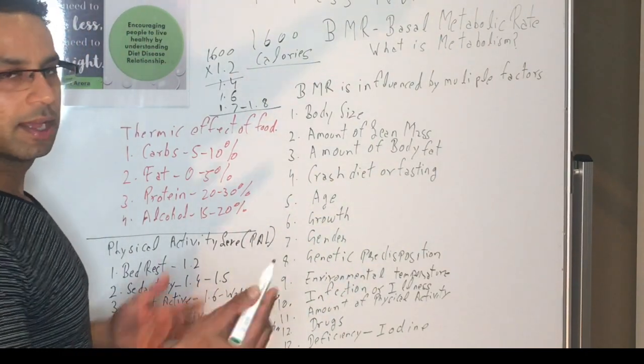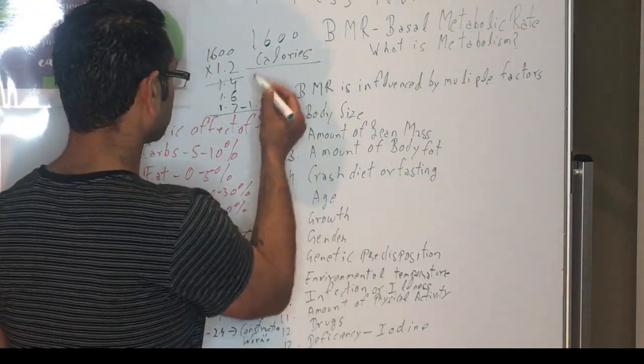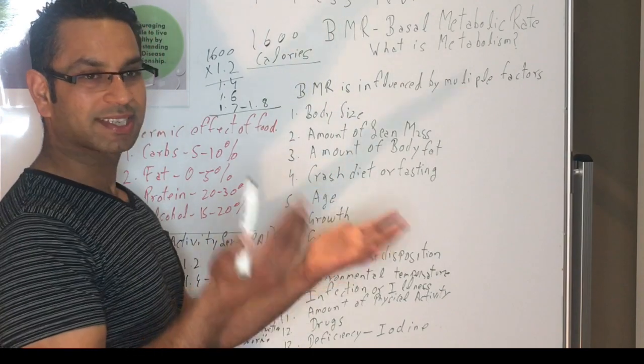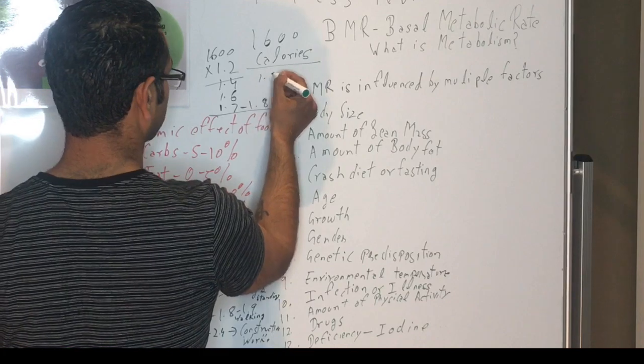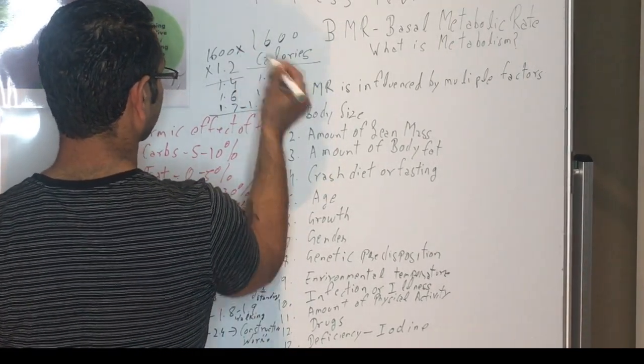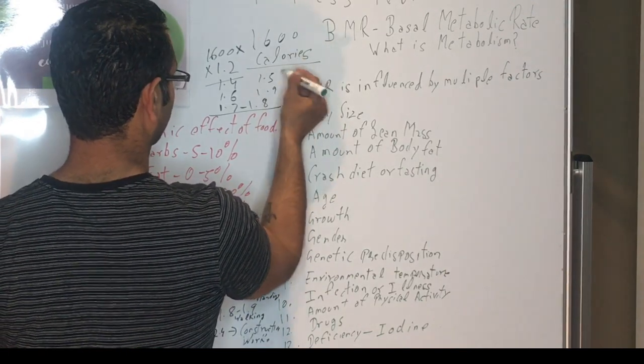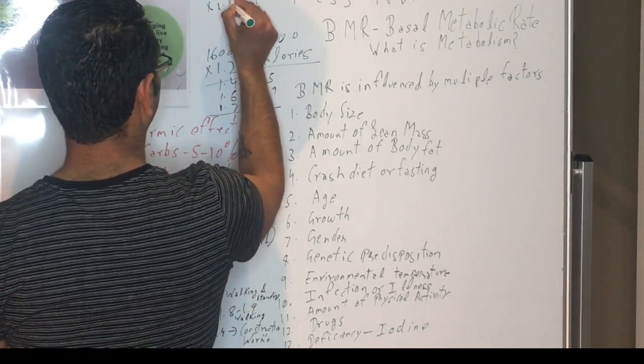So it's pretty tricky to calculate, but the way you can try is if you want to see how your body responds, you can start from anywhere from 1.2 to 1.9 and then see how you multiply, and then that will tell your calories. For example, 1600 times 1.5 is 2400.